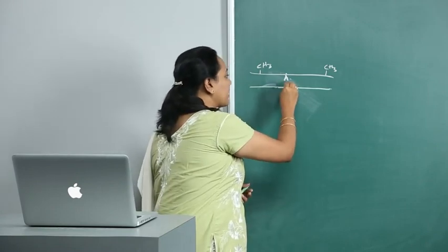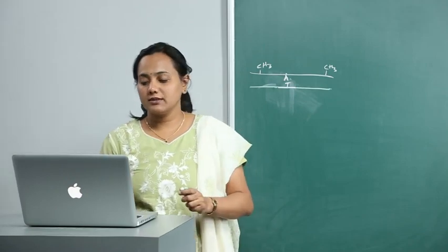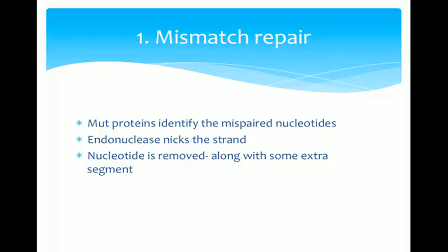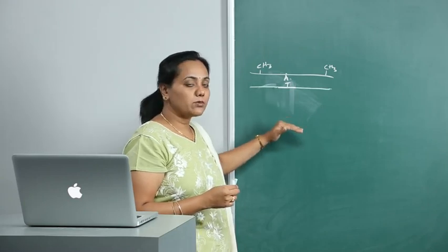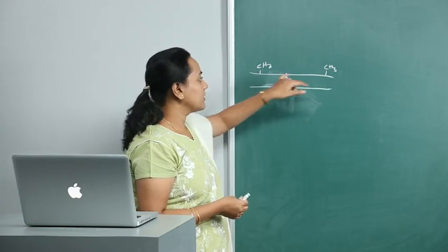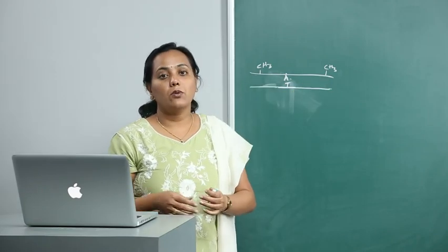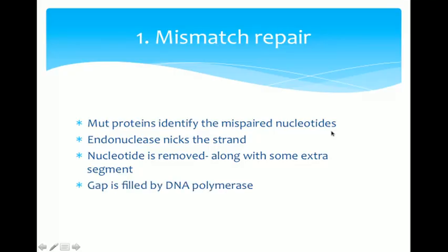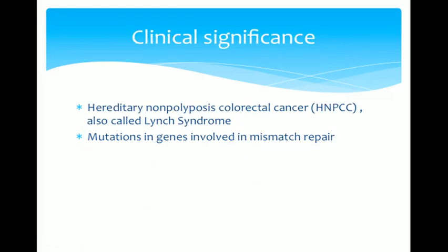To summarize mismatch repair: this occurs for errors during replication. The mismatched site is removed along with some flanking segment; DNA polymerase and DNA ligase then form the new correct segment. One important point — recognition of the old strand relies on its methylation. Gap is filled by DNA polymerase and the ends are ligated by DNA ligase.